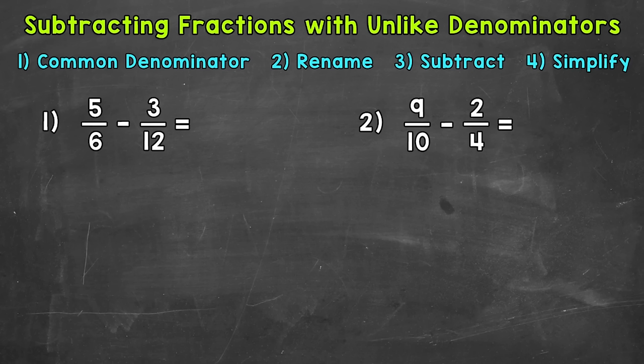The first thing that we need to do is find a common denominator, and we can do that by finding the least common multiple between our denominators. We want the least because smaller numbers in value are generally easier to work with, and this will help cut down on simplifying in the end once we get to our answer.